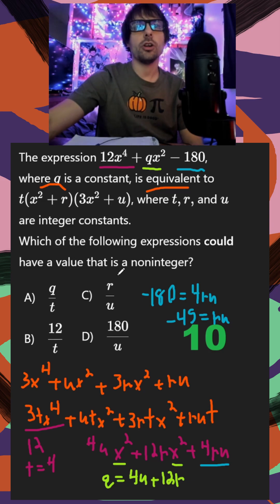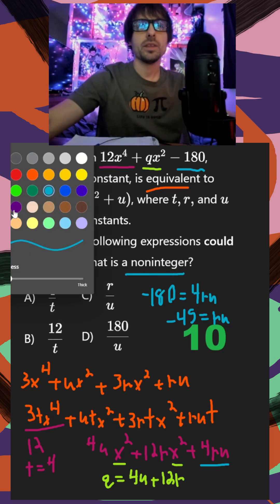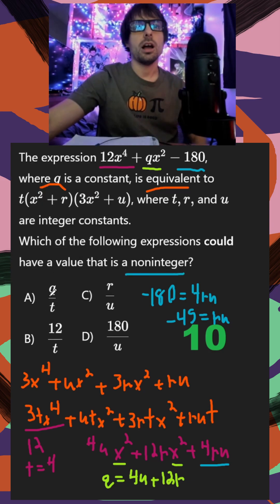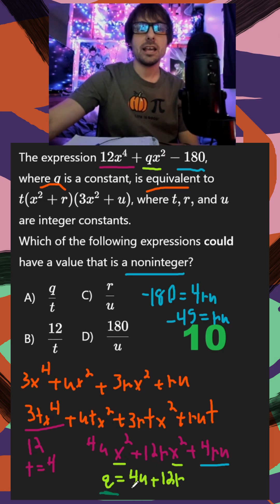And finally, they want to know which one of the following is a non-integer. So it's not as bad as it looks. Q over t. So what I can notice from my q term is this is times 4, this is times 12, everything is divisible by 4. So t, remember, is 4, everything in q is divisible by 4. So this is definitely going to be an integer.